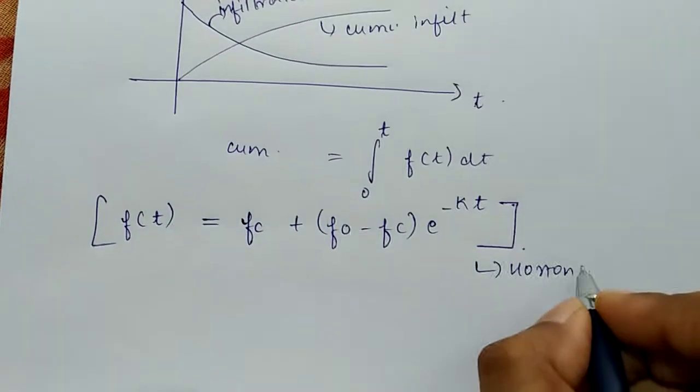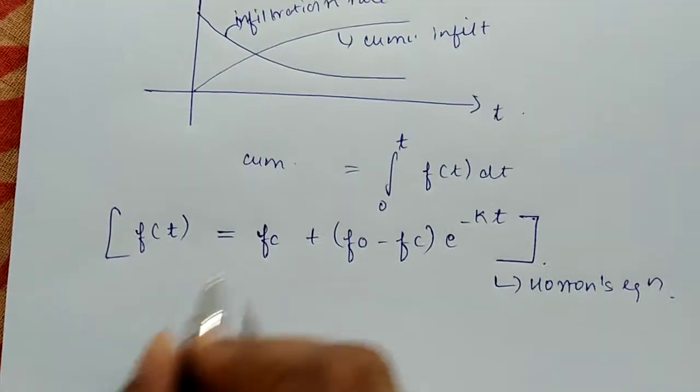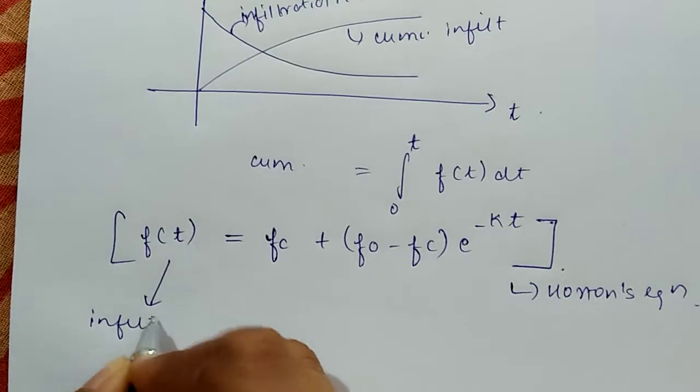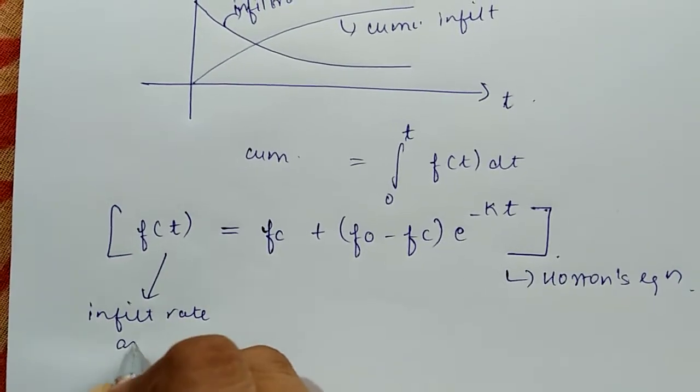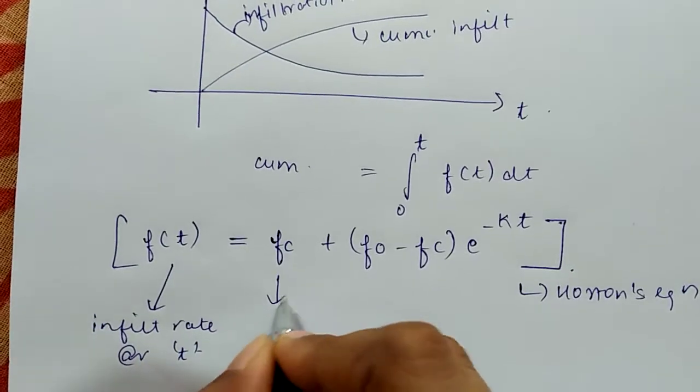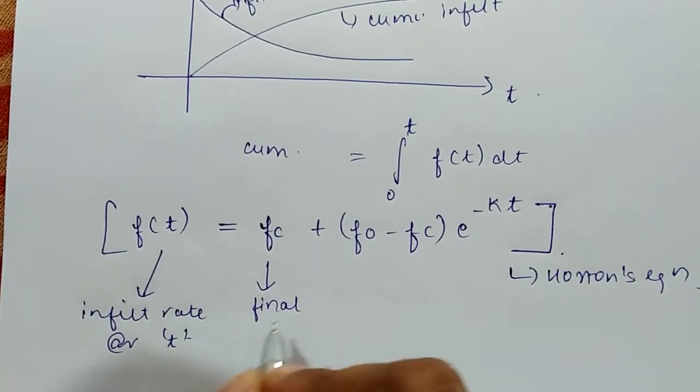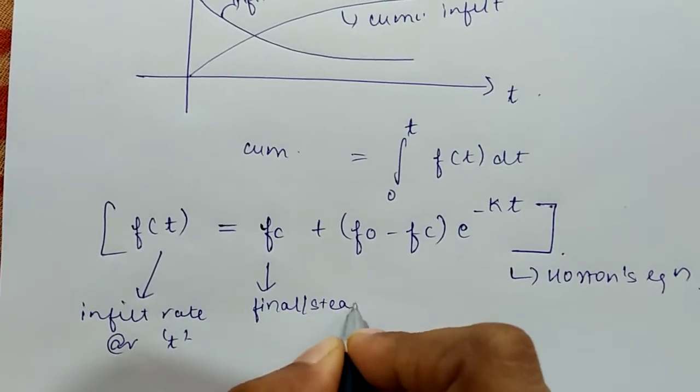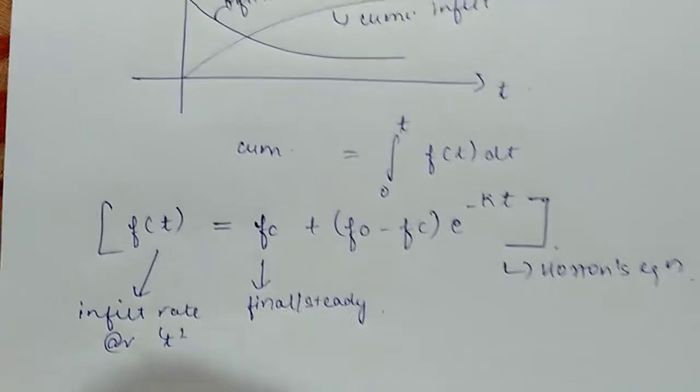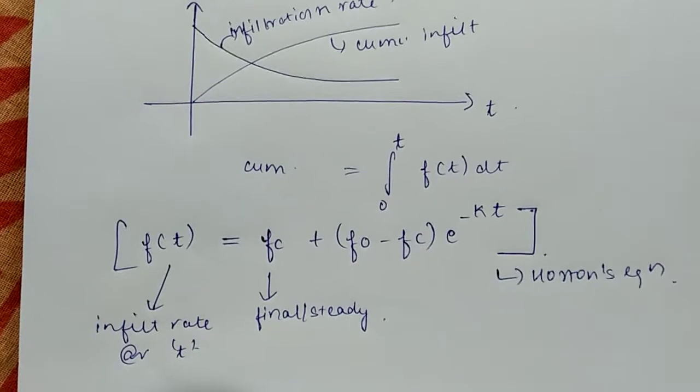In this equation, ft is infiltration rate at any point of time t, at any instant t. fc is the final or steady infiltration rate achieved after infinite time.